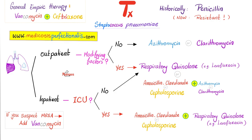Do you have other options besides a respiratory quinolone? Yes — you can give a beta-lactam plus azithromycin or clarithromycin. What kind of beta-lactam? Amoxicillin-clavulanate. But if the bacteria is penicillin-resistant, switch to a cephalosporin — the best are cefpodoxime and cefuroxime.